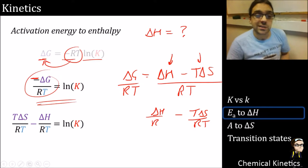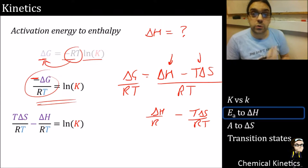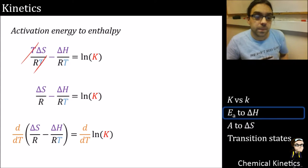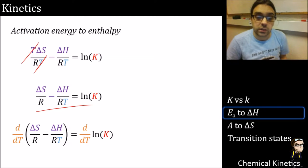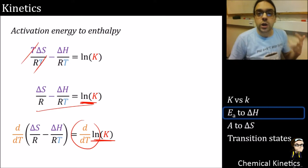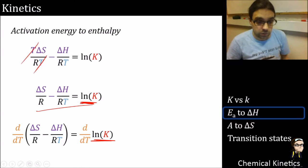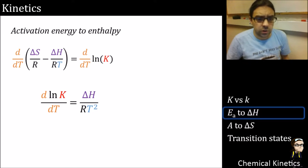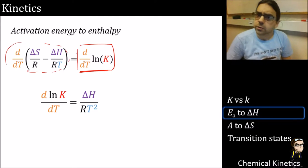From there we cancel things down - the T delta S term cancels out, giving a simplified version. We then differentiate with respect to temperature, since we earlier differentiated log K with respect to T and have log K on this side. So we apply the d/dT operator to both sides of the equation.